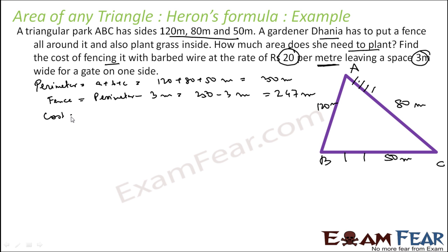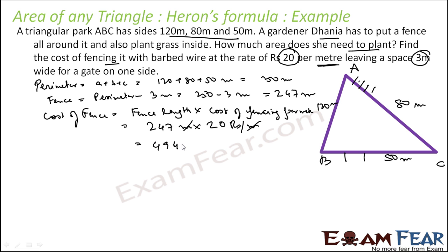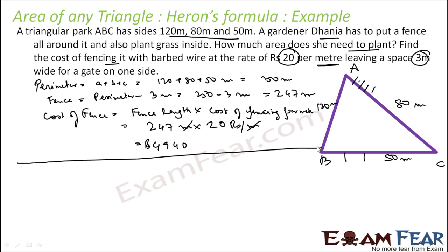What is the cost of fencing? Cost of fencing equals fence length multiplied by the cost of fencing per meter. That is 247 meters into rupees 20 per meter — the meter units cancel — and you get 4940. That is the cost of fencing. First part is done.